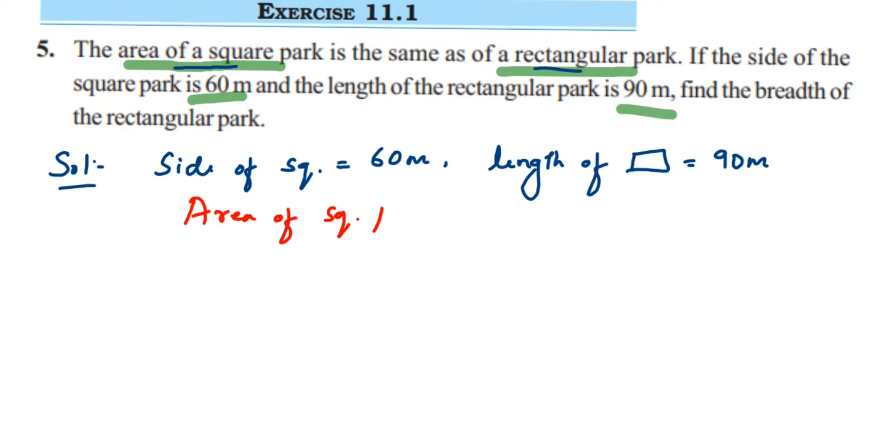Now what is area of square? The area of square is side into side, so it's side squared. And area of rectangle is length into breadth. We substitute the formula here, so it's side squared and area of rectangle is length into breadth.